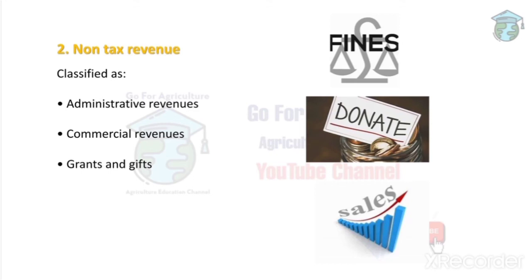Commercial revenues come from products or services that belong to the government itself — like railways. The railway is a government entity, but when you buy a train ticket, you are giving them money. Similarly, oil also typically belongs to the government. Even though we pay for these, they are government-run — this is commercial revenue. Grants and gifts refer to funds as described earlier.